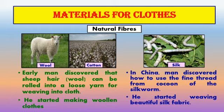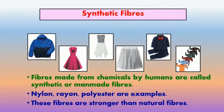Silk — in China, man discovered how to use fine threads from the cocoon of the silk worm to weave beautiful silk fabric. Synthetic fibers are fibers made from chemicals by humans, and thus they are also known as man-made fibers. Nylon, polyester and rayon are examples of synthetic fibers.